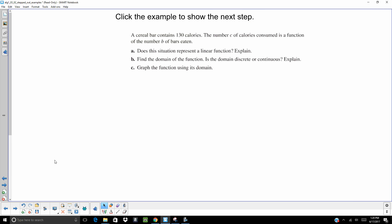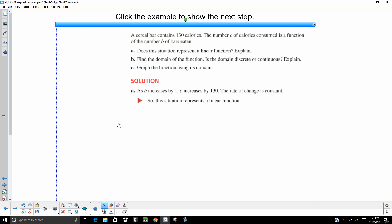A cereal bar contains 130 calories. The number of calories consumed is a function of the number B of bars. So as B increases by 1, C increases by 130. That rate of change is constant. So it is a function.